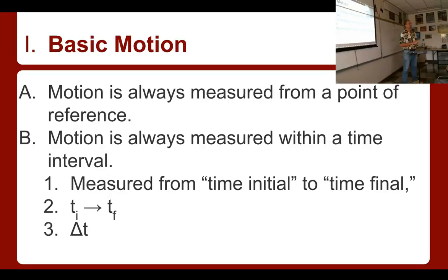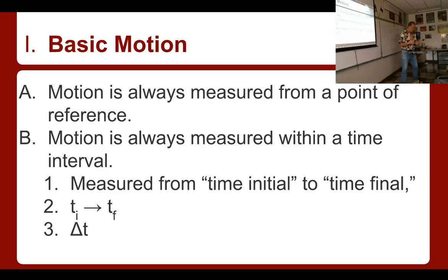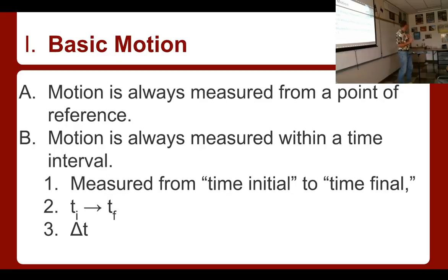Right now I don't look like I'm moving because my relative motion to you is not changing. But you and I both are on the surface of a planet that is spinning at thousands and thousands of miles an hour. That motion is impossible to perceive because we are all spinning at the same rate, and that planet is traveling through the solar system at a ridiculously fast speed. If I were to suddenly stand truly still, I would go crashing through that wall because the planet is spinning.